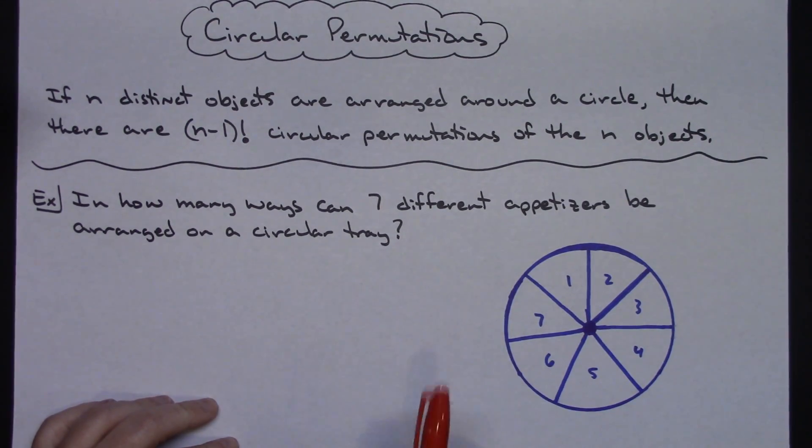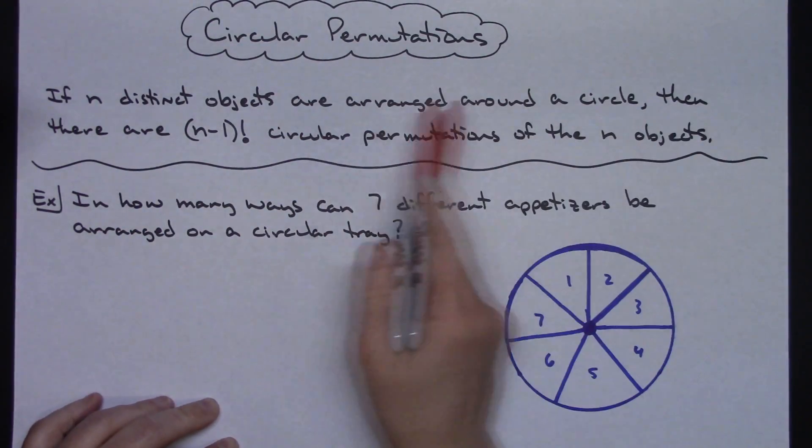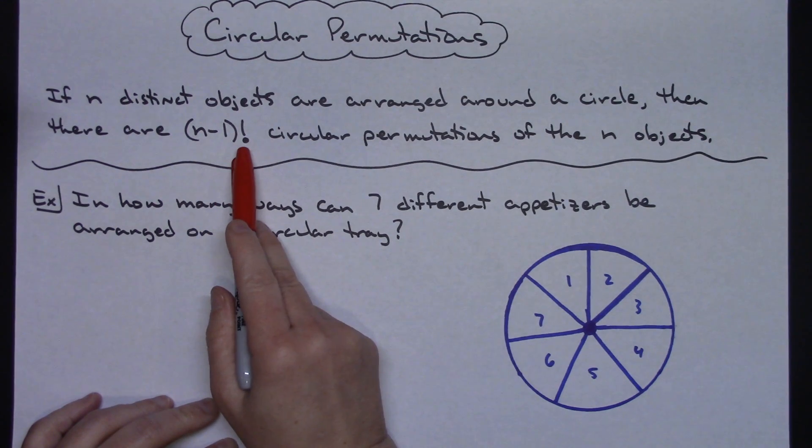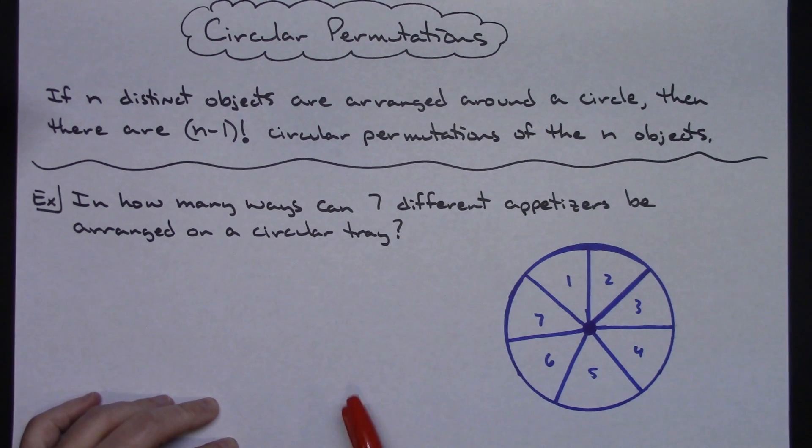In this video I'm going to be talking about circular permutations. If n distinct objects are arranged around a circle, then there are n minus one factorial circular permutations of the n objects.